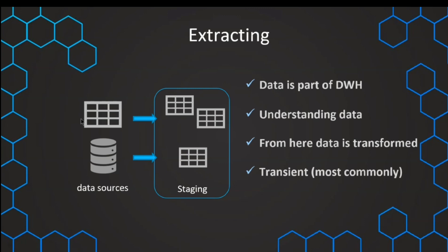The typical type of staging layer is the transient type — the most common type. This means that all of the data, once it has been copied from the staging layer with the transformation, will be deleted or truncated from the staging layer. Until the next run, it will be empty until new data is loaded into the staging layer, and only that new data will then be copied into the core layer.